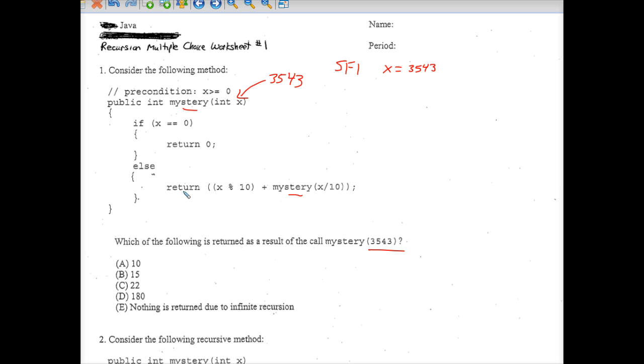So we go down to the else. And now we have to return whatever this is. Well, unfortunately, this is not a simple number. We have to figure this out. So x mod 10, 3543 mod 10 is 3.